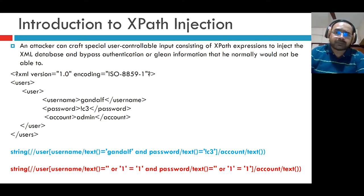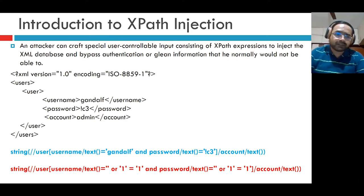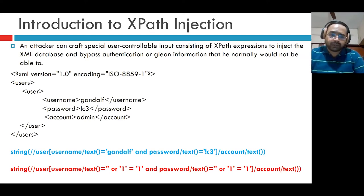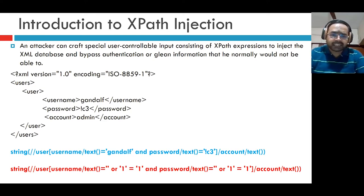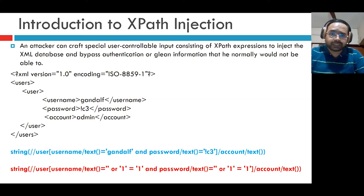To understand XPath injection attacks, let us first understand the structure of a basic XML document. Here you can see an XML document with three fields — username and password — which store legitimate usernames and passwords. The line shown in blue is a valid, legitimate query with appropriate username and password specified. The last line in red is a malicious query because it involves Boolean operators and special characters such as numbers, 'or', '1=1', and so on. This malicious query gives access to resources illegally.